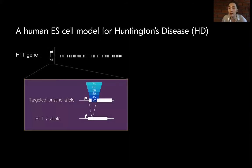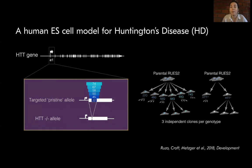Therefore, we used CRISPR-Cas9 to generate an isogenic collection of human embryonic stem cell lines to model HD. Since disease onset and severity correlate with the number of CAG repeats, we generated an allelic series with increasing CAG length, where 20 is the wild type and 72 corresponds to the repeat length found in the juvenile form of the disease, thereby allowing us to model the entire disease spectrum.